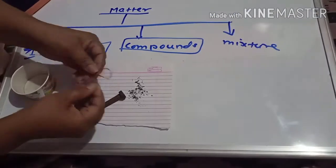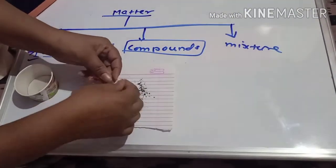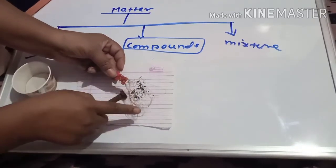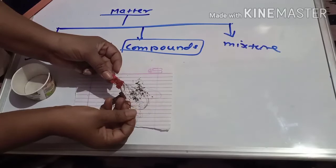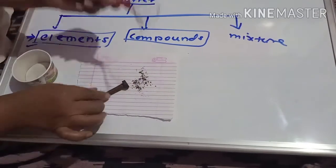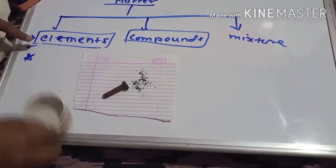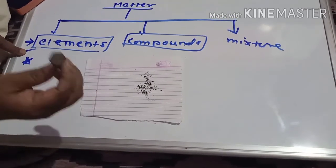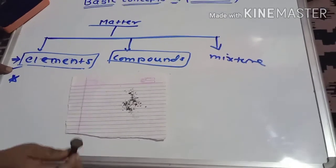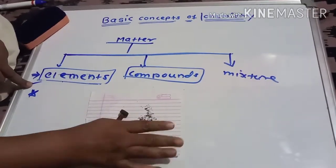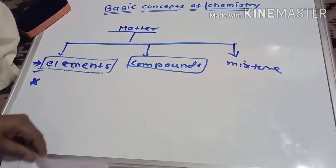Similarly, the wire used for completing an electric circuit is also an element, made up of only one type of substance — copper. So, elements are those substances that we have to accept as they are. We cannot divide the substance into simpler ones by any chemical or physical process. All the particles of these substances are alike. This type of substance is called an element.